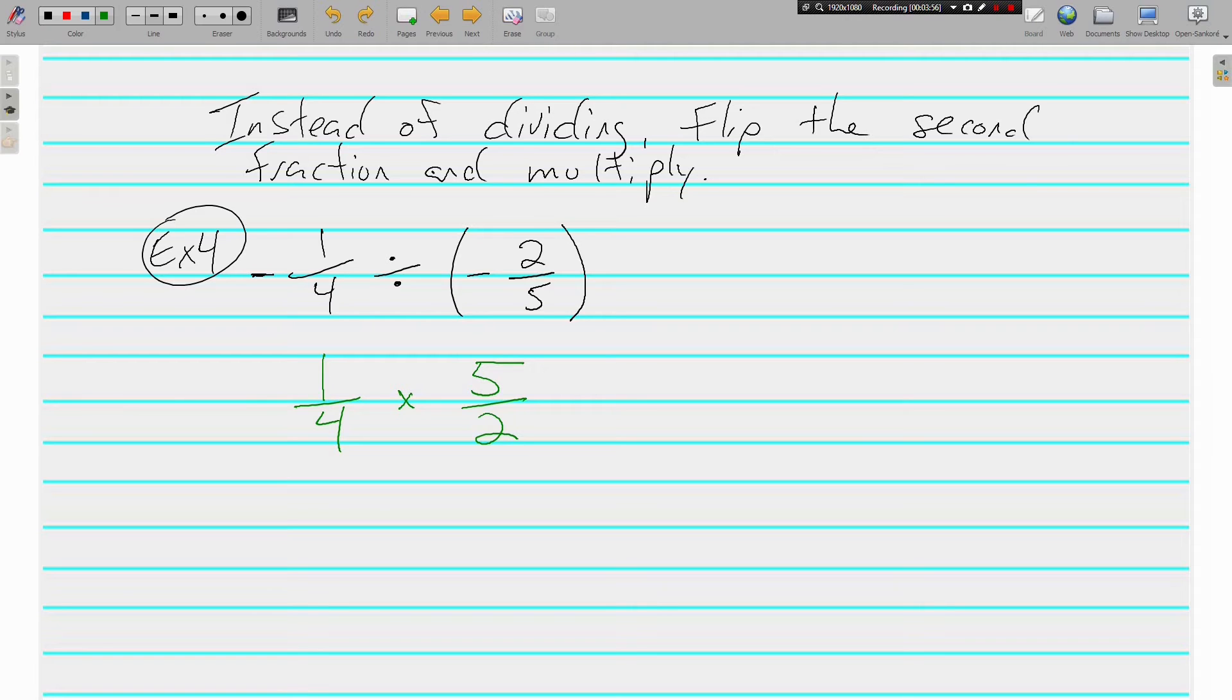Think about it like this. Half of 100 is 50. Let me write it off to the side. Half of 100 or half times 100 is 50. 100 divided by 2, which is really 2 over 1, is also 50. Multiplying by a half and dividing by 2 are the same thing. So dividing by 2 5ths and multiplying by 5 halves are the same thing. These are called reciprocals, R-E-C-I-P-R-O-C-A-L-S.